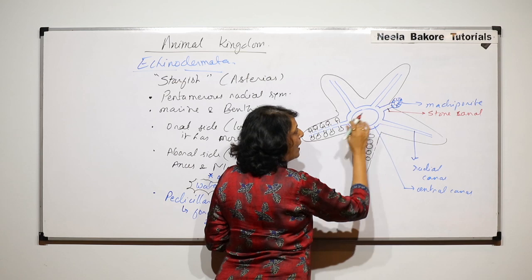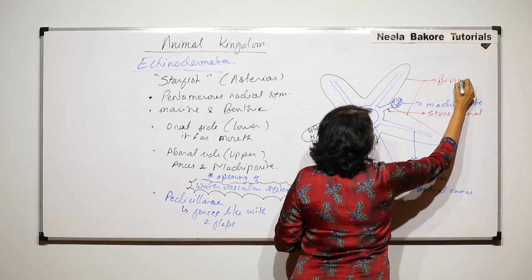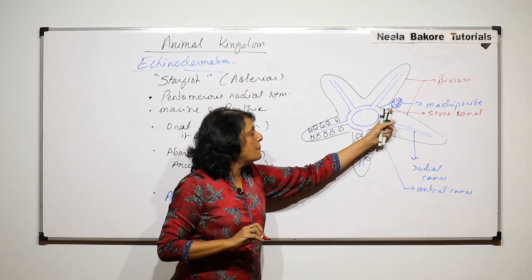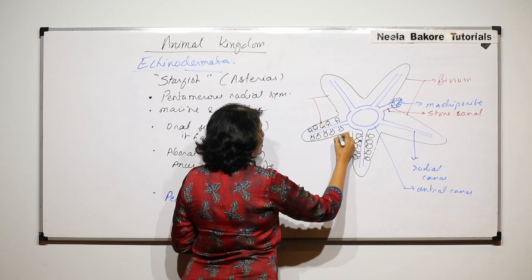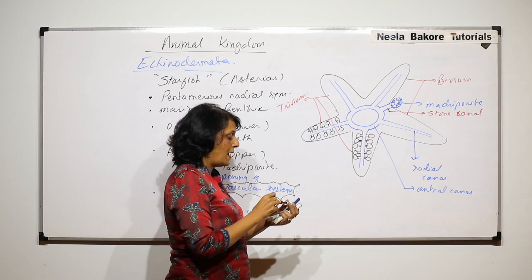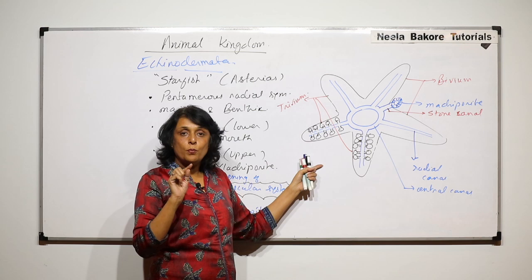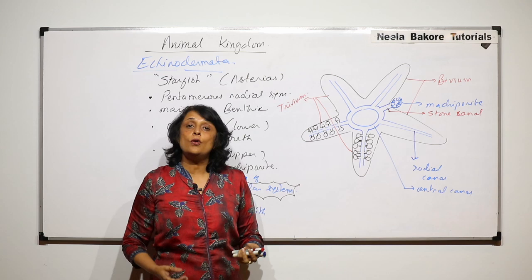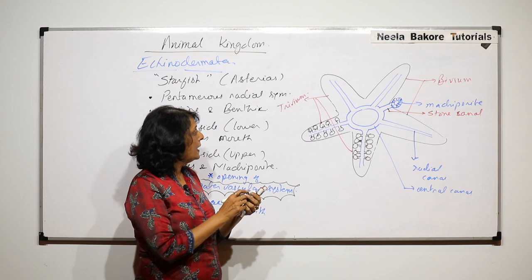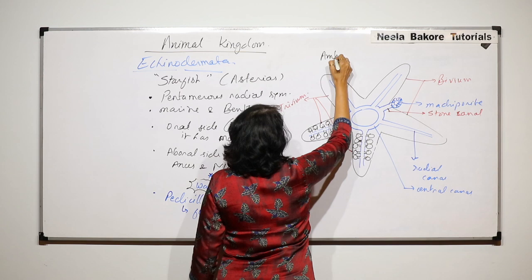On either side of the radial canal there are tube feet. The two arms between which the madreporite is present are known as the bivium. The remaining three arms together form the trivium. So water comes in through one opening, goes through the central canal, then through the radial canals, and comes out through the tube feet. The water vascular system is also known as the ambulacral system.